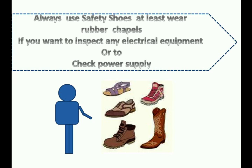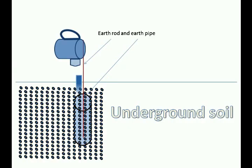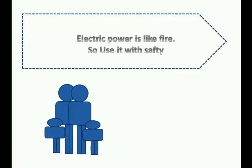Always use safety shoes, or at least wear rubber slippers, if you want to inspect any live electrical equipment or check the power supply. Pour water on the earthing pipe in your home to maintain good soil contact resistance — this will help you have a good earthing system.